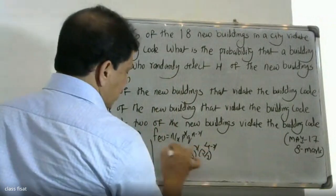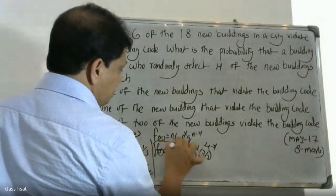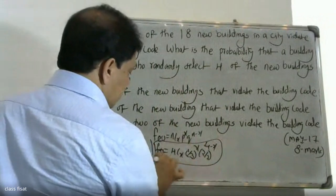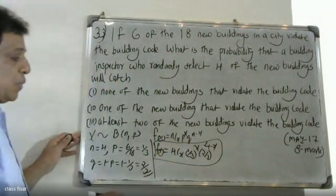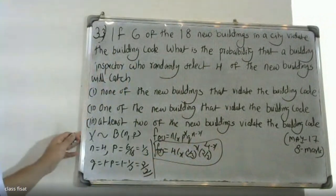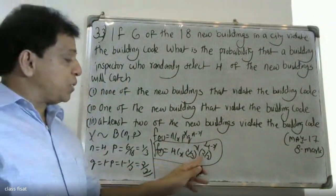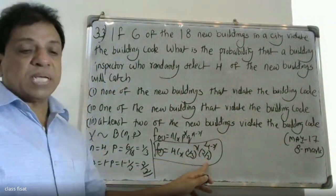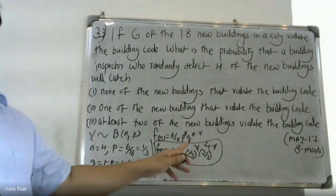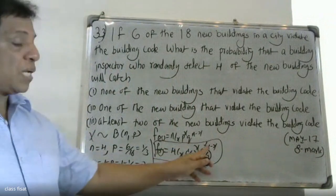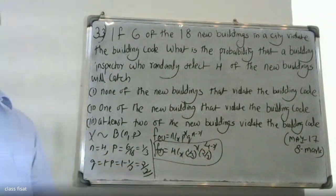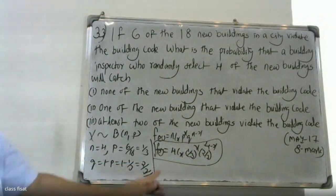The binomial distribution formula is f(x) = 4Cx times (1/3) raised to x times (2/3) raised to (4 minus x). This is the value of the binomial distribution formula we will use for all three questions.